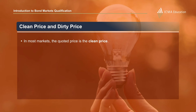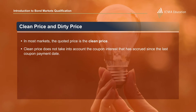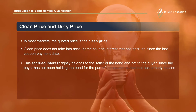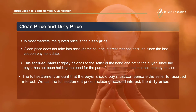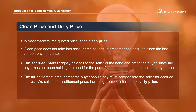In most markets, the quoted price is the clean price of the bond, and that clean price does not take into account any coupon interest that has accrued since the last coupon payment date. This accrued interest — interest that has been earned but not yet paid — rightly belongs to the seller of the bond, not to the buyer, since the buyer has not been holding the bond for the part of the coupon period that has already passed. The full settlement amount that the buyer pays must therefore compensate the seller for this accrued interest.